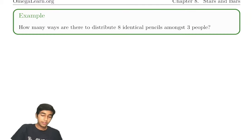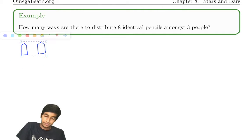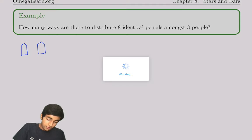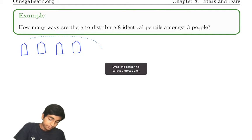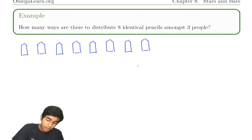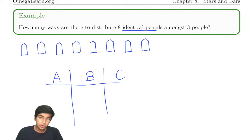Let's start off with a simple example. We've got to distribute eight identical pencils to three people — A, B, and C. By default we assume the people are different. The key condition here is that the pencils are identical.